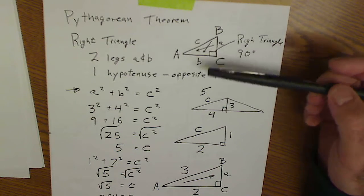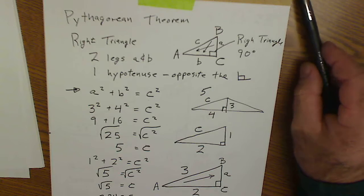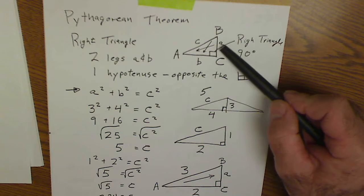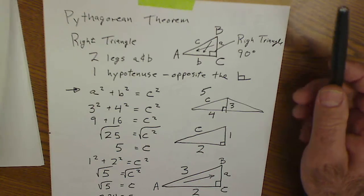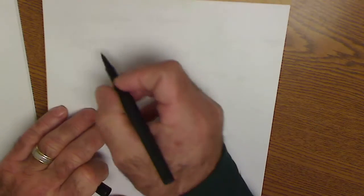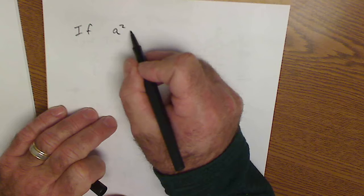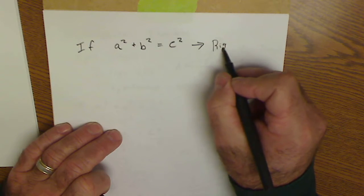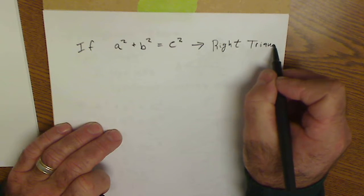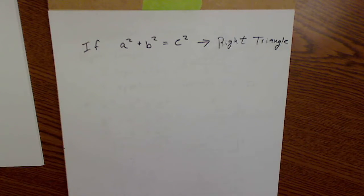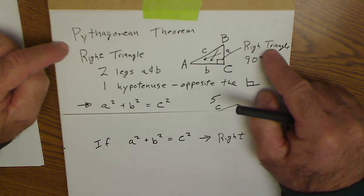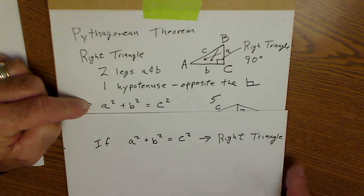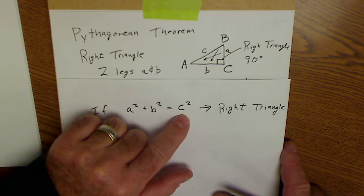The Pythagorean theorem is probably the most useful equation in carpentry. And the converse is true too. The theorem says: in a right triangle, one leg squared plus the other leg squared equals the hypotenuse squared. The converse says: if one leg squared plus the other leg squared equals the hypotenuse squared, then it is a right triangle. This is how you check if things are square.